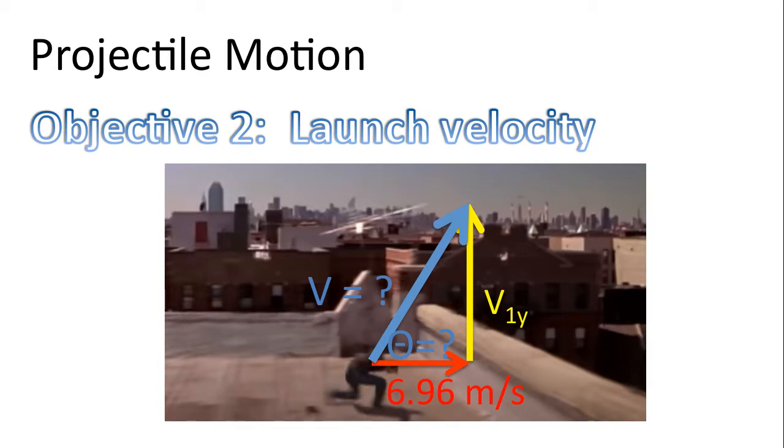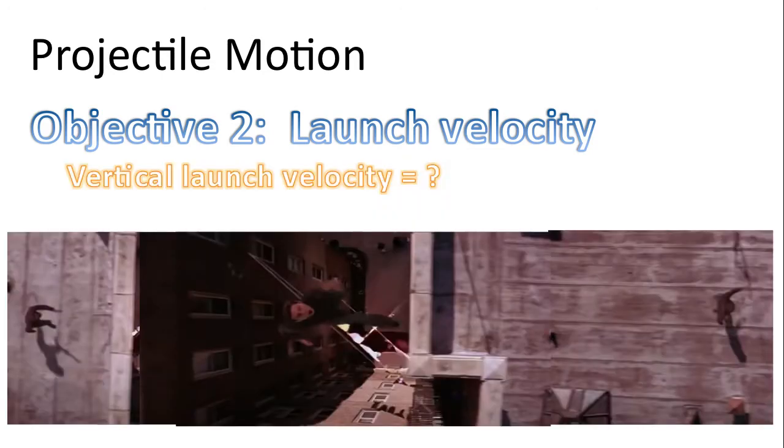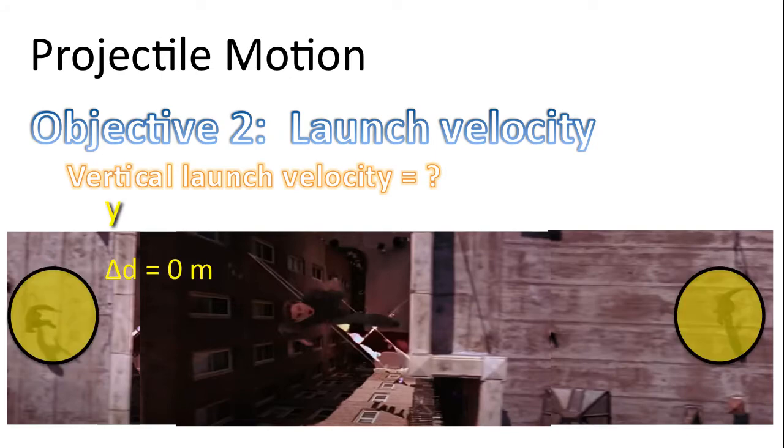So the real problem now is how do we determine spider-man's launch velocity in the upwards direction, in the y direction. And so let's look at this picture one more time. We are making one big assumption here: that the two buildings are at the exact same height. So we're assuming if the two buildings are at the exact same height, his displacement is 0.